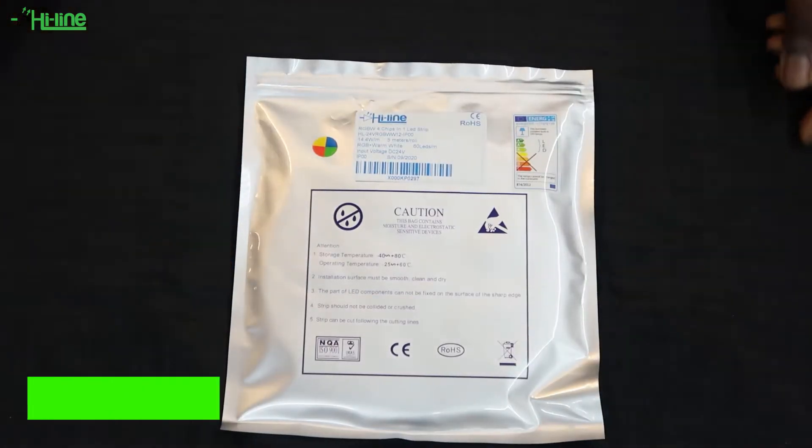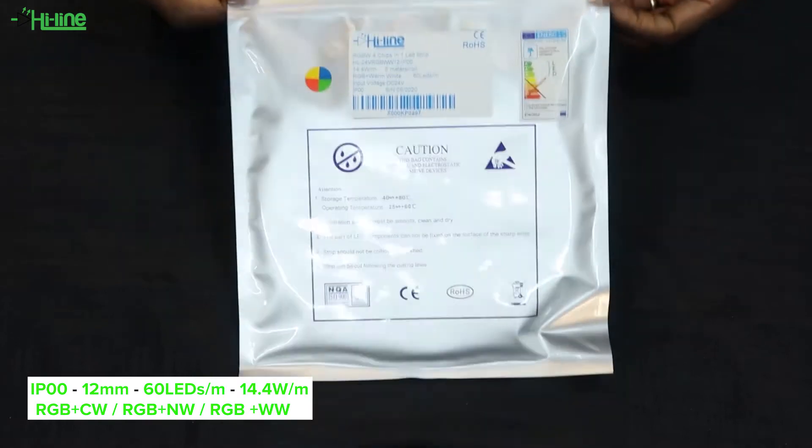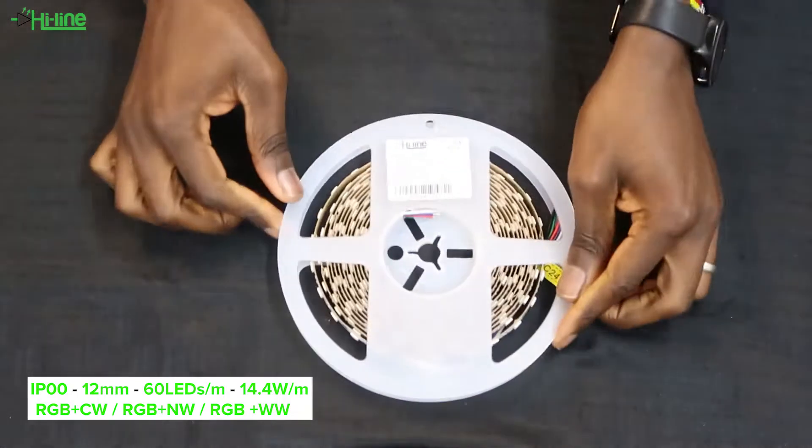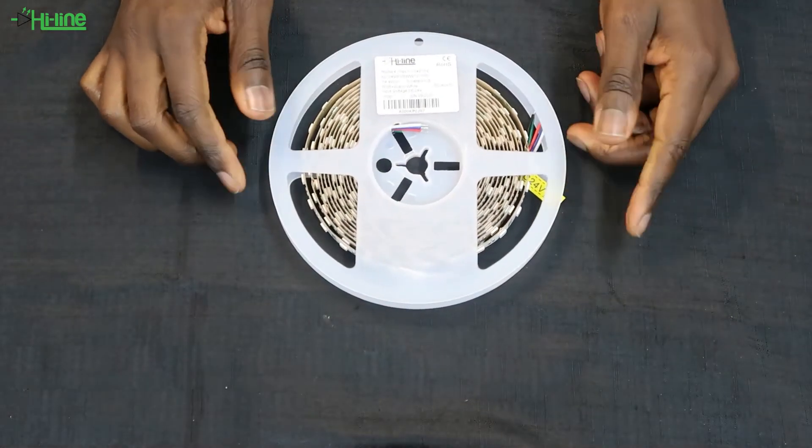Today we're going to talk about our 12 millimeter RGBWW strip with 60 LEDs per meter at 14.4 watts per meter. It is an IP00 strip and is available in cool white, natural white, and warm white.